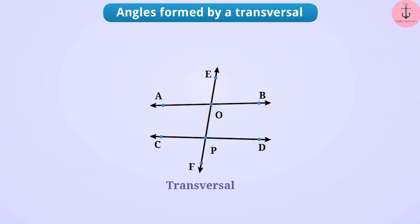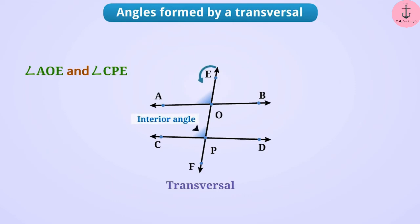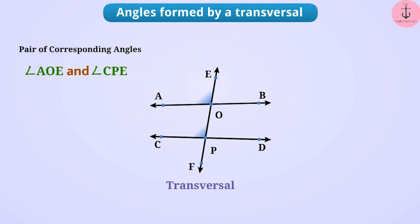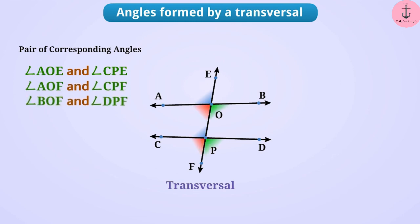Angle AOE and angle CPE have different vertices, are on the same side of the transversal, with one being an interior angle and the other an exterior angle — they form a pair of corresponding angles. Corresponding angles are at corresponding positions of two lines, like above and below or left and right. Further pairs of corresponding angles are: angle AOF and angle CPF, angle BOF and angle DPF, and angle DPE and angle EOB.